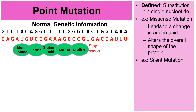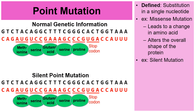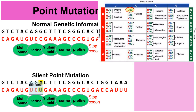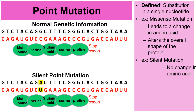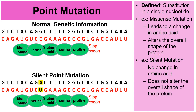Another type of point mutation is a silent mutation. The bottom sequence has a silent point mutation shown in yellow: a G has been mistakenly changed to an A. Through transcription, a U appears in the RNA. When the ribosome reads UCU, looking at the amino acid chart, UCU still codes for serine — the same amino acid. There was no change in the amino acid, so this does not change the overall shape of the protein — hence the reason it's called a silent mutation, an example of a harmless mutation.